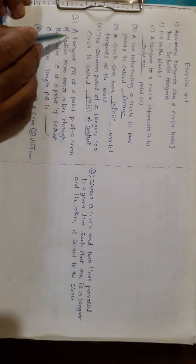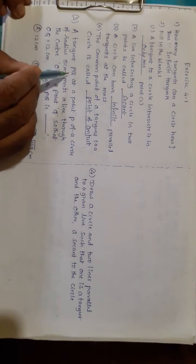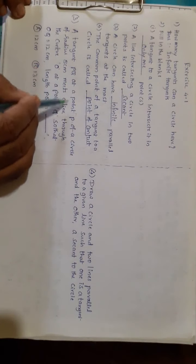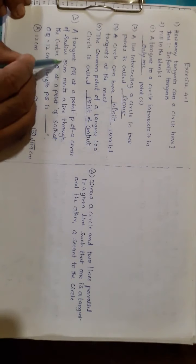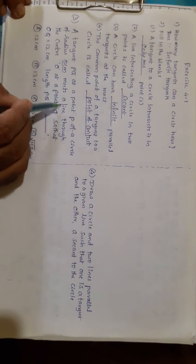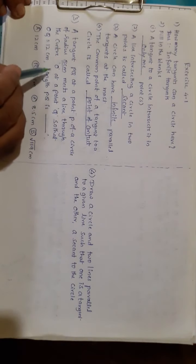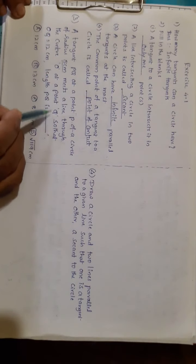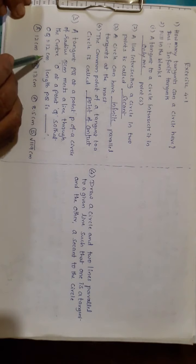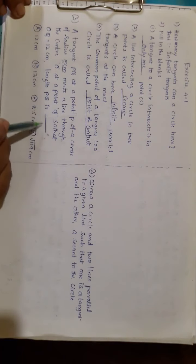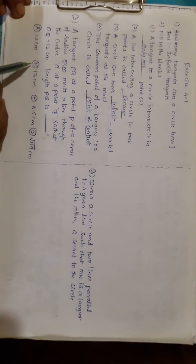Now let us come to the third question. A tangent PQ at point P of a circle of radius 5 centimeters meets a line through the center O at point Q, so that OQ equals 12 centimeters. Find the length of PQ. Let us solve.